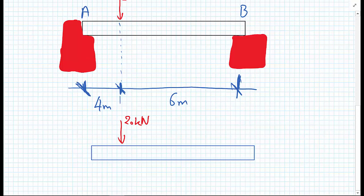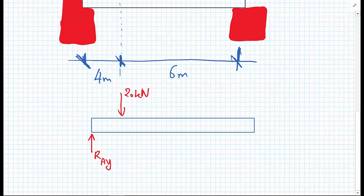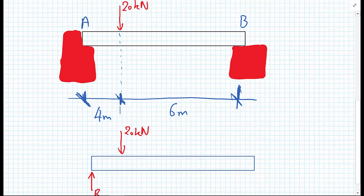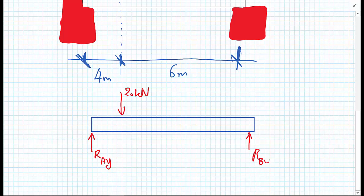We need to now inspect what are the boundary conditions or the support conditions here. So at A, we can see that the wall definitely adds some support in the Y direction, and I'm going to label that support R for reaction with a subscript A for where that reaction is, and a Y telling me which direction that reaction is acting in.